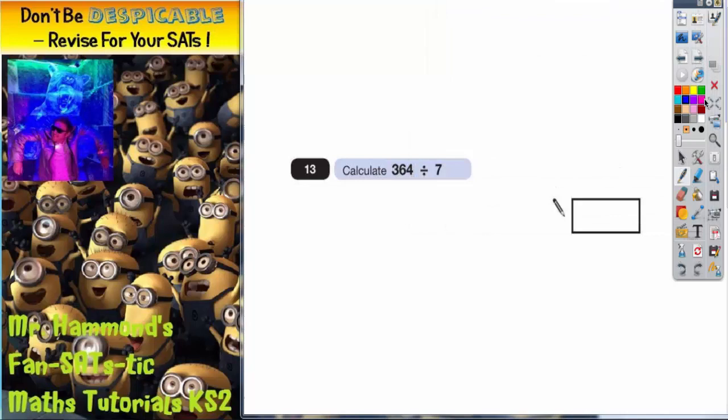Question 13. Division. Calculate 364 divided by 7. The quickest and most efficient way to do a short division, and a short division is when you're dividing by anything less than 10, is to do a bus shelter. So how many 7s go into 364?